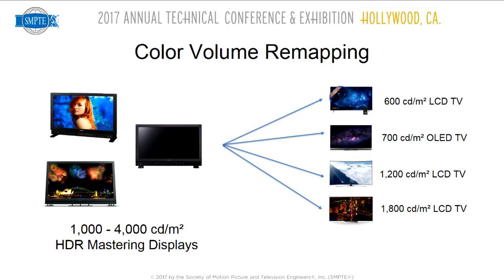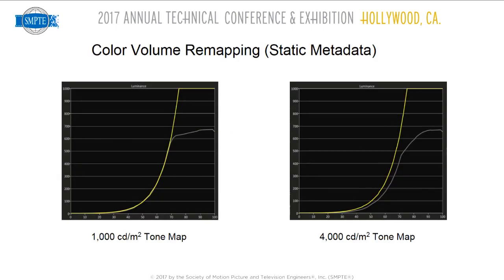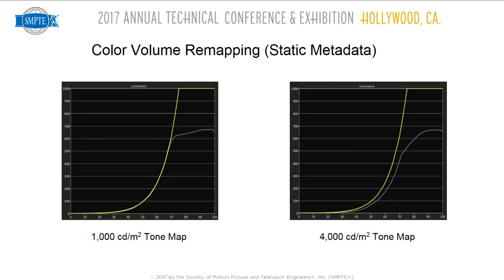The display needs to remap the content to preserve creative intent on that device. The first approach is using static metadata — ST2086 static metadata from SMPTE. On paper it sounds like a good idea, but it really only tells you what's the brightest pixel in the whole movie. You could have a very dark movie with one explosion, and the metadata would say max CLL is 1,000 nits. If the TV is looking at that metadata, it might sacrifice the accuracy of 99% of the movie in order to preserve that one highlight.